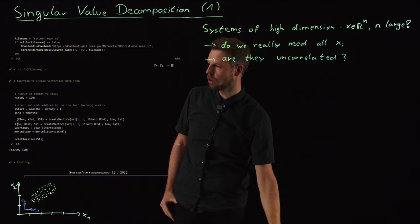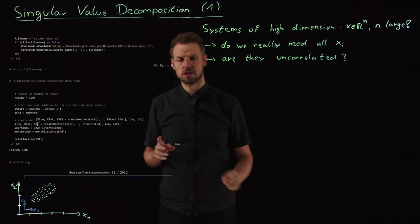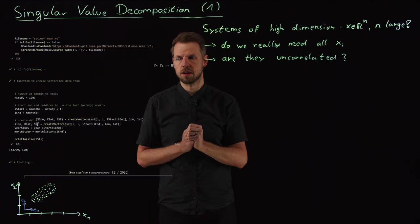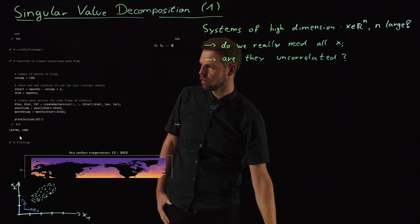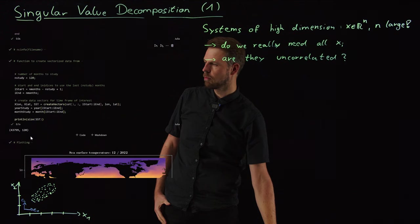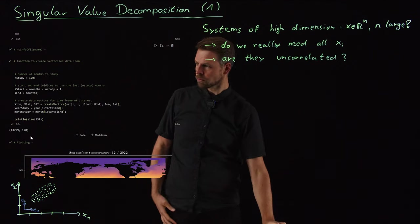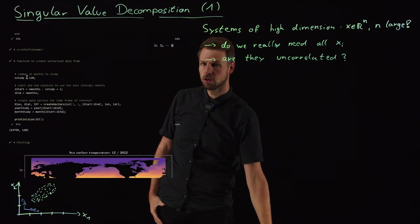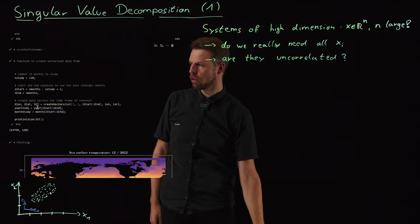We have the longitudinal coordinate. We have the latitudinal coordinate. And we have this SST matrix, which is our data matrix consisting of sea surface temperature measurements at distinct point in time. Now here you see the dimensions. So we have a 43,799 dimensional state, which means this number of measurements in space. And we have 120 snapshots. So this is the value I've chosen myself.